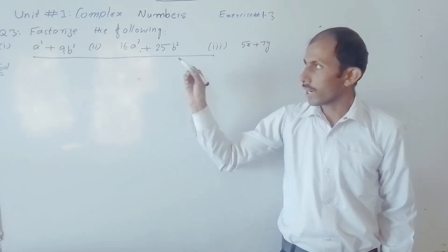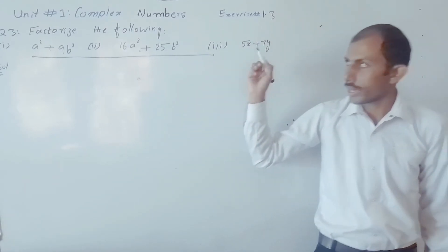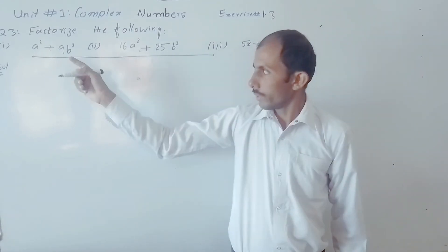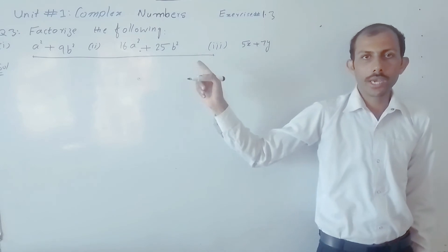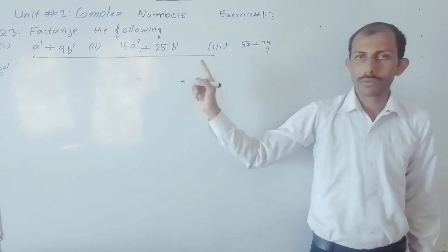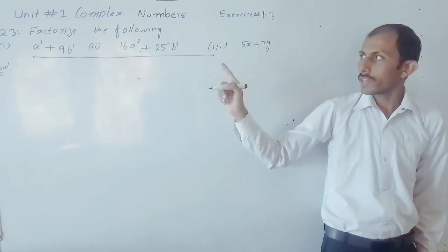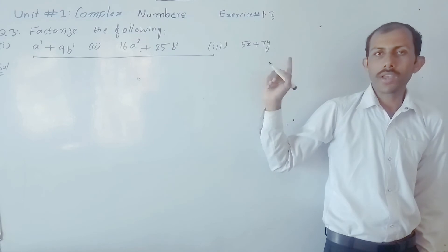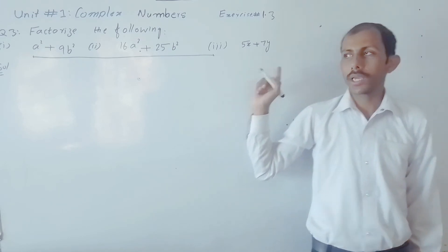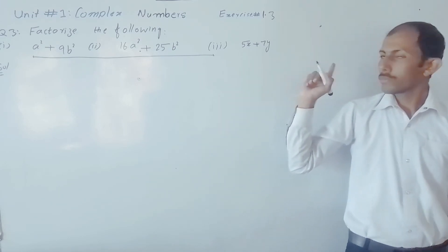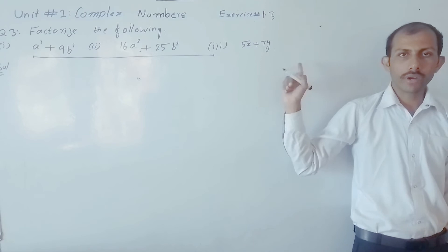If you have the following: part number one, a² + 9b²; part number two, 16a² + 25b²; part number three, 5x + 7y².